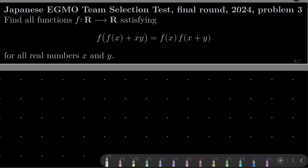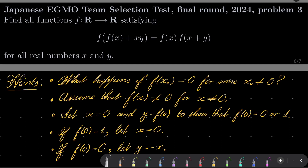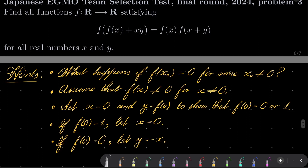Here are my hints for this equation. First, consider what happens if f(x₀) = 0 for some non-zero argument — pretty easy to verify what happens then. Now assume that it does not happen, so f(x) is not zero for non-zero arguments. Set x to be zero and y to be f(0) to show that f(0) is either zero or one. If f(0) is one, let x be zero. And if f(0) is zero, let y equal minus x. Also do the verification after each step. Give this problem a try.